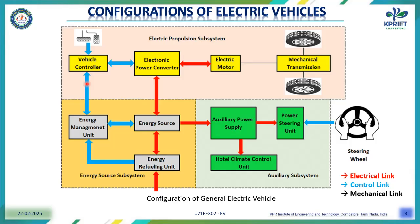Now we are going to see about the electric propulsion system. It consists of the vehicle controller, electronic converter, electric motor, and transmission system. The vehicle controller takes input from the driver — that is, acceleration or braking — and is connected to the power electronic converter. The power electronic converter is connected between the energy source and the motor.